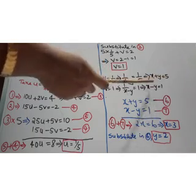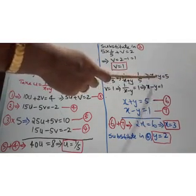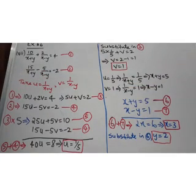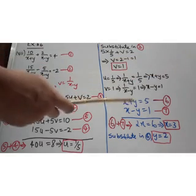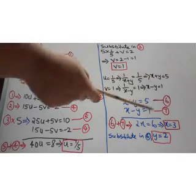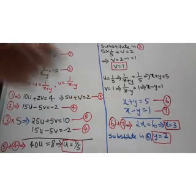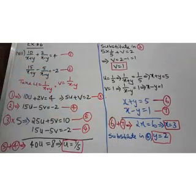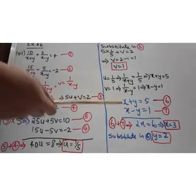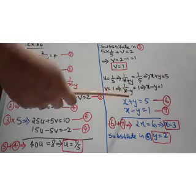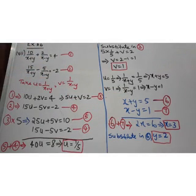Re-substituting gives us two new equations: x plus y equal to 5 and x minus y equal to 1. These are two equations in x and y, not the final answer yet. So we need to solve these two equations again using elimination. Adding the two equations eliminates y: 2x equal to 6, so x equal to 3. Substituting in the sixth condition gives y equal to 2. Therefore, x equal to 3 and y equal to 2 is the solution of the given equations.